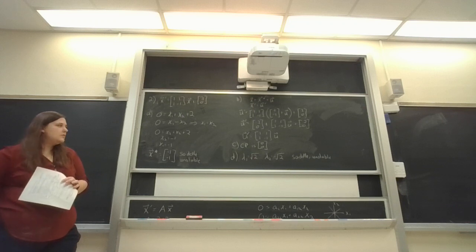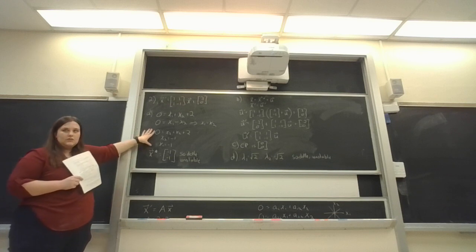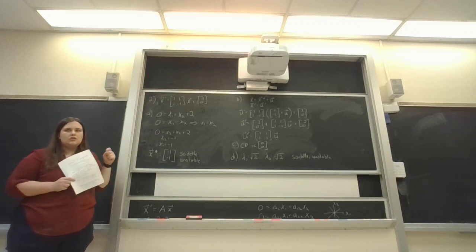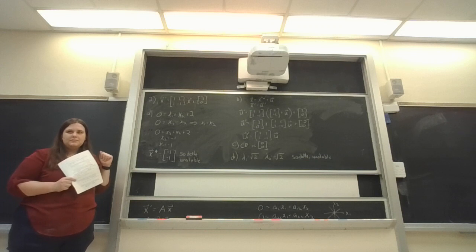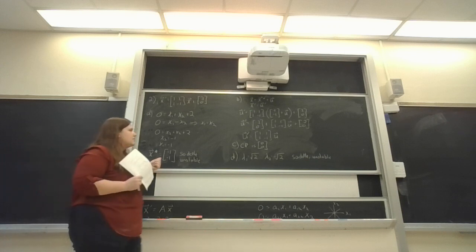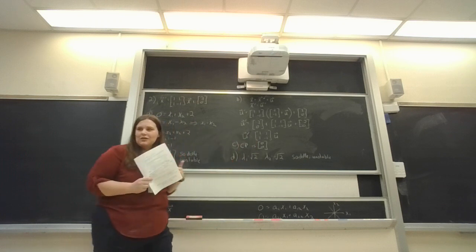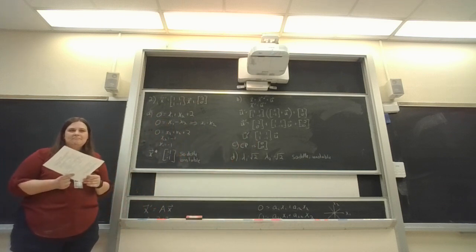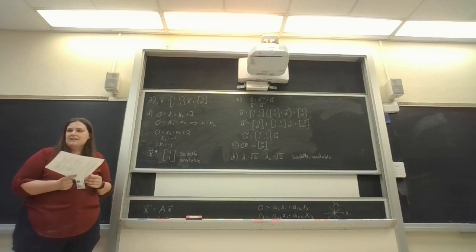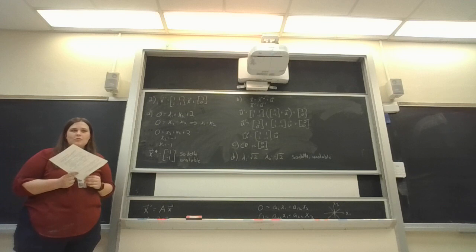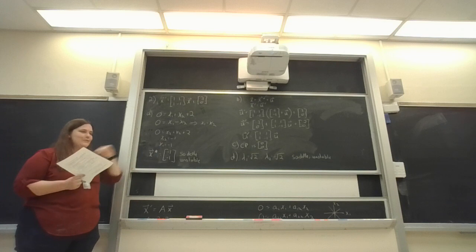The long story short is we did all this math, right? So this is how you're going to find the critical points when you have a non-homogeneous system. But do you really need to go through the change of variables in order to classify this critical point? Because all we ended up doing was finding the eigenvalues of our original matrix. That's going to happen again. So I gave you an example of why this change of variable works, but you're going to be able to just use the original matrix.